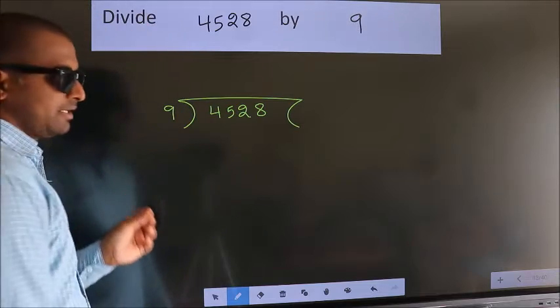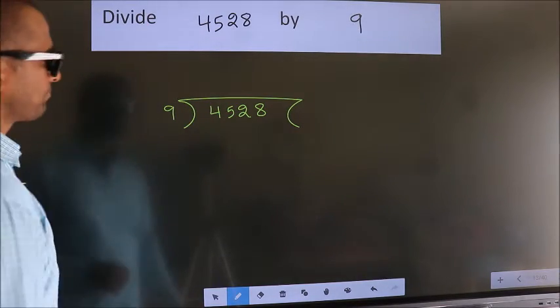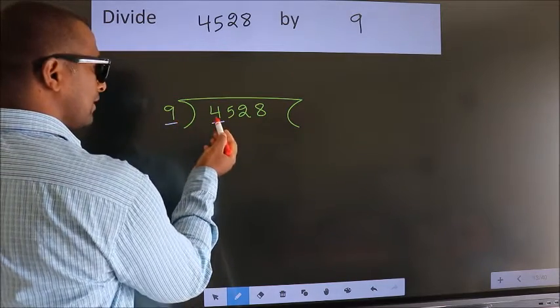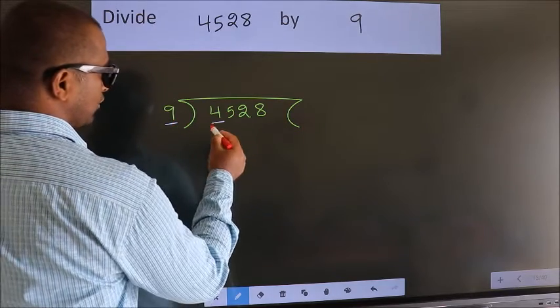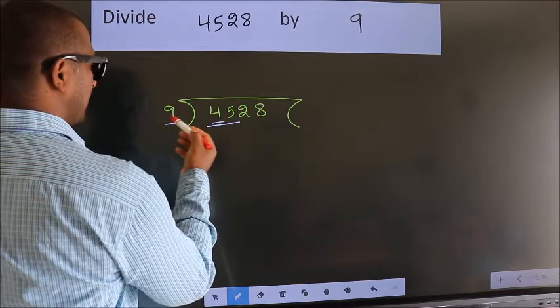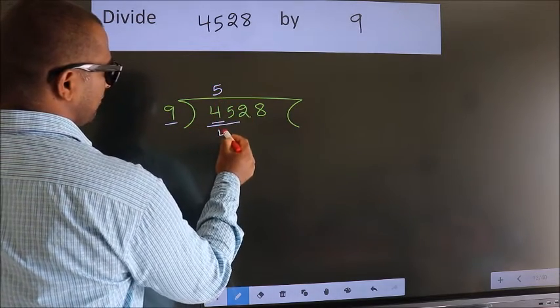This is your step 1. Next, here we have 4, here 9. 4 is smaller than 9, so we should take 2 numbers: 45. When do we get 45 in the 9 table? 9 fives, 45.